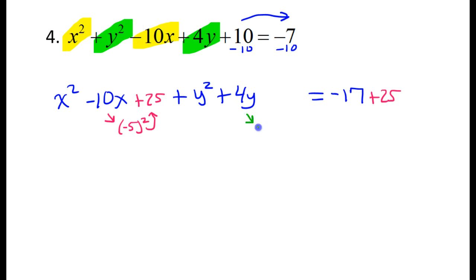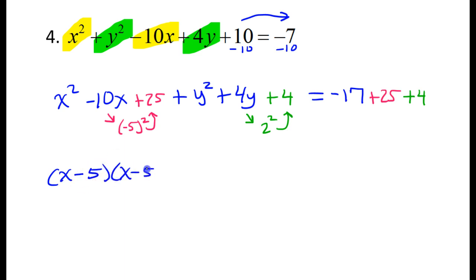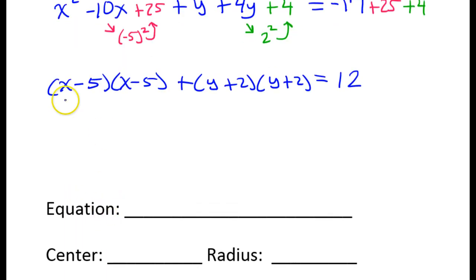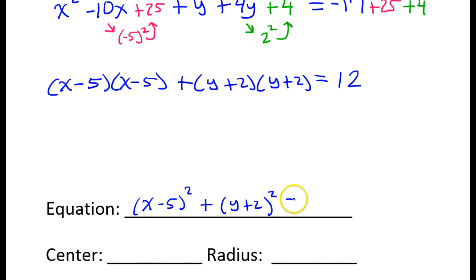For the y's, I do the same thing — half the middle squared. Half of 4 is 2, and 2 squared is positive 4. So I will add 4 to the other side as well. When I factor this, it will factor as (x minus 5)(x minus 5), and this part will factor as (y plus 2)(y plus 2). Adding up these three numbers, I'm getting 12. Because I have the same binomial twice, I can write x minus 5 squared plus y plus 2 squared is equal to 12. That's the standard form equation.